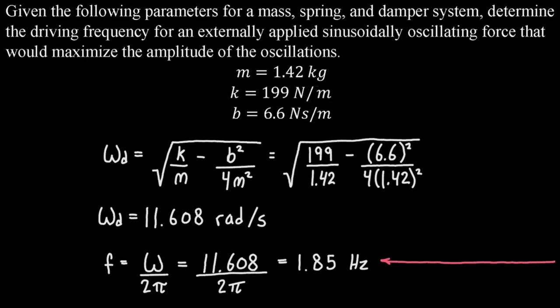If we do that we get that our frequency is equal to 1.85 hertz — that's the natural frequency of the system. Now if we want the driving frequency that maximizes the amplitude of the oscillations, we just set our driving frequency equal to the natural frequency. So our driving frequency is also 1.85 hertz.